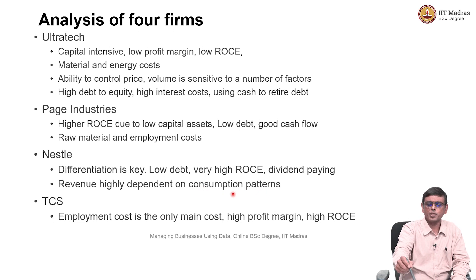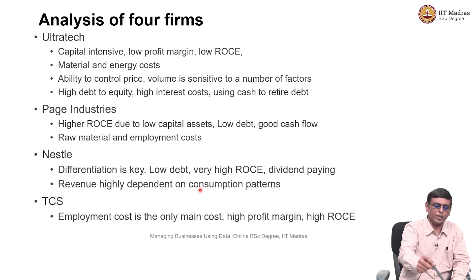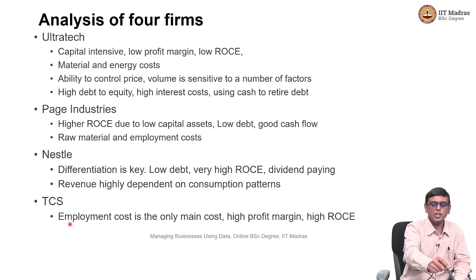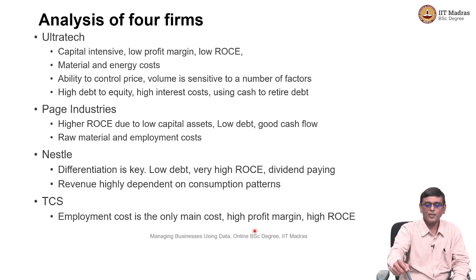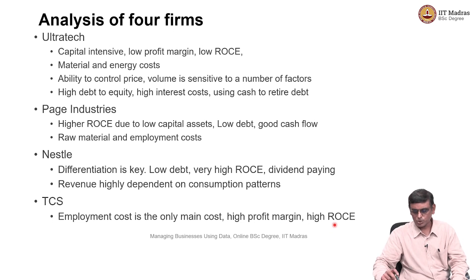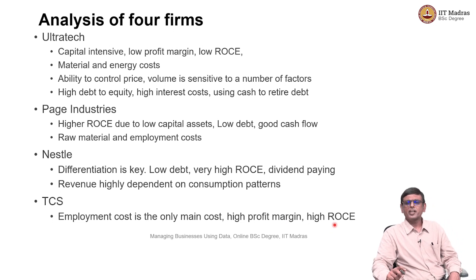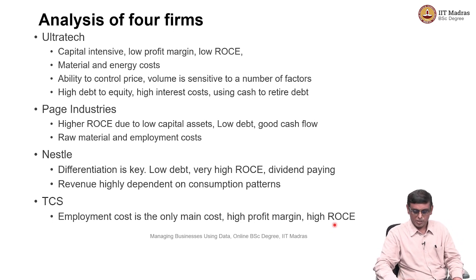Nestle is very highly dependent on consumption patterns — clearly it is FMCG, so it should be dependent on consumption. Then we saw TCS, an IT company — their only main cost is employment. They have a very high profit margin, very high ROCE, and generate a large amount of cash. So it is a very good business in that sense. Those are the four firms we analyzed.